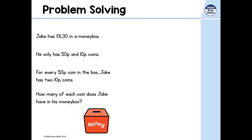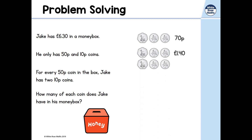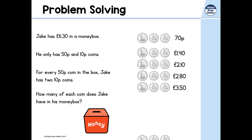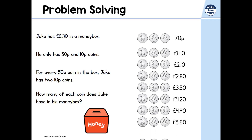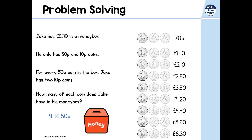Let's visualise this. For one 50p coin there are two 10p coins, and together that makes 70p. Adding another 50p and two more 10p coins gives £1.40. Continuing: £2.10, £2.80, £3.50 — keep adding 70p and eventually we get to £6.30. How many of each coin do we have?